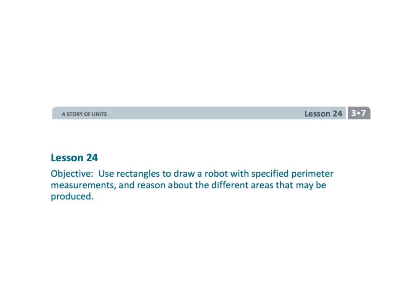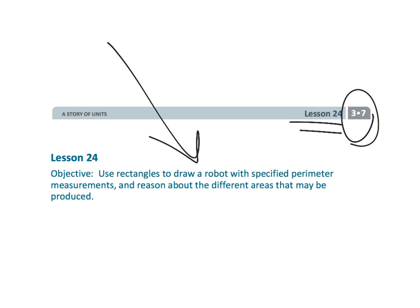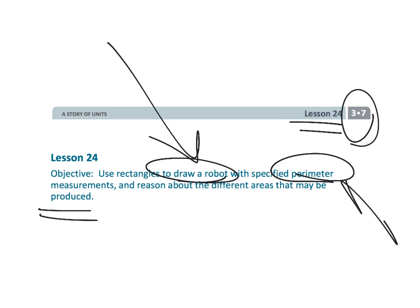And that wraps up 3rd grade, Module 7, Lesson 24. In class the students are building a robot, but the homework is really talking about a variety of different rectangles and their perimeters.